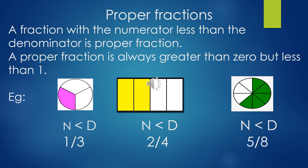The first fraction is one by three. In the second figure, two shaded parts out of four — numerator is less than denominator, giving two by four. In the third figure, five shaded parts out of eight — numerator is less than denominator, giving five by eight. One by three, two by four, and five by eight are proper fractions.